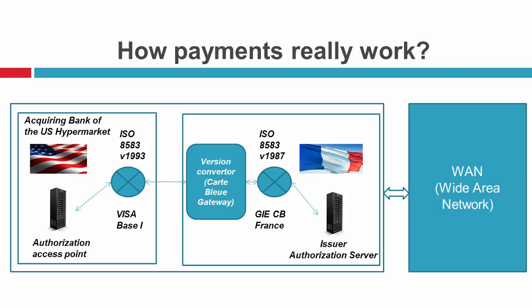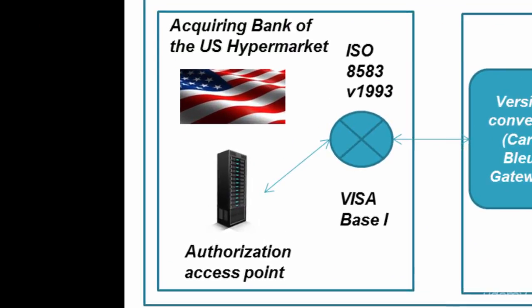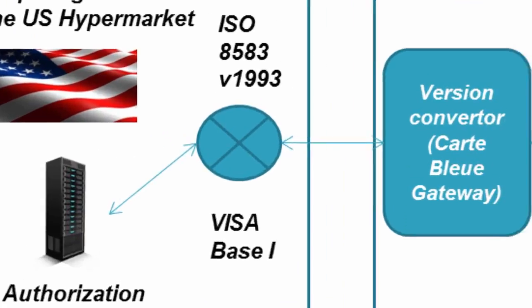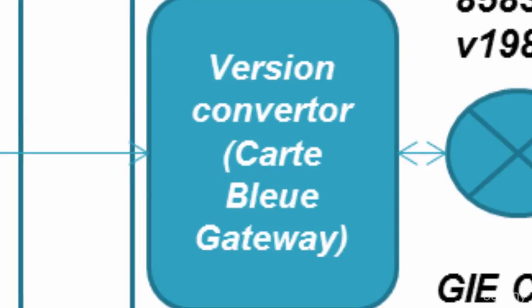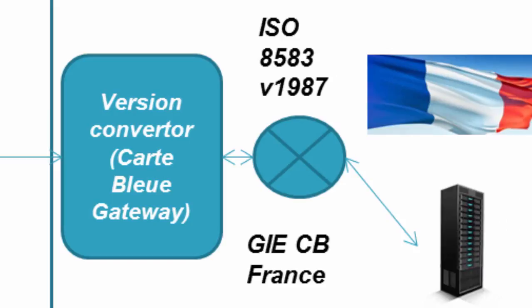The WAN — the wide area network — is composed of the US side: the acquiring bank of the US hypermarket reaches the Visa Base One, which is the technology component of Visa, recognizing the ISO 8583 protocol version 1993. Then this gateway will reach the French gateway through a converter, because the French gateway uses the 1987 version of ISO 8583.